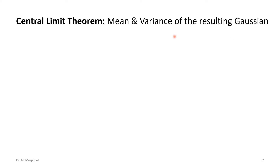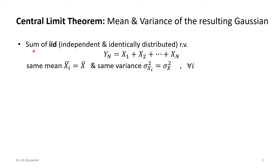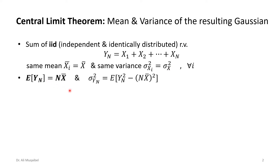Now we focus on the mean and variance of the resulting Gaussian from the CLT. We consider the sum of IID variables — IID stands for independent and identically distributed, meaning they have the same distribution and same PDF. If you sum IID random variables, the generated Y will be X1 plus X2 up to Xn. They all have the same mean x-bar and the same variance sigma-x-squared. The expected value of Y equals n times x-bar, so if the mean is five and we're adding five of them, the mean of the sum is 25.